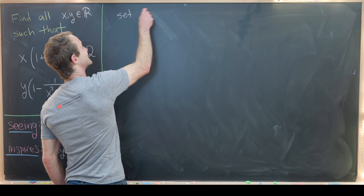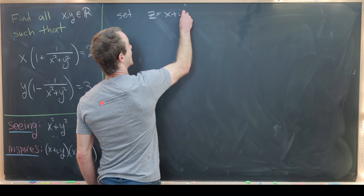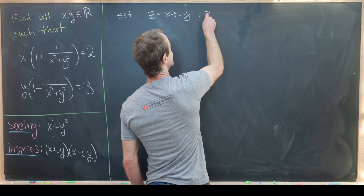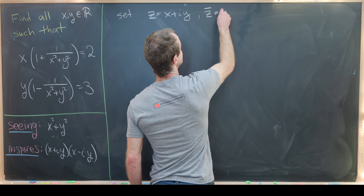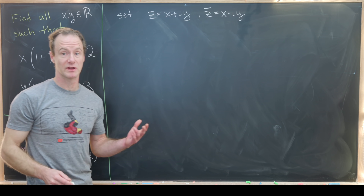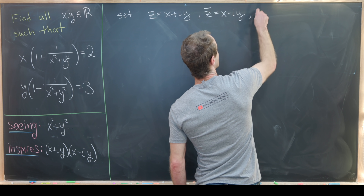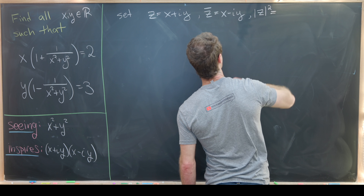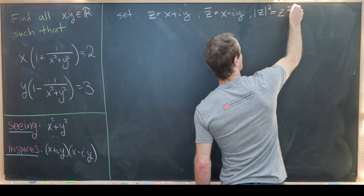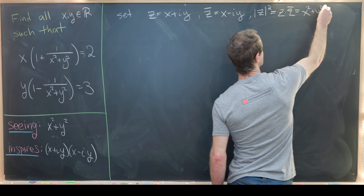Let's set z equal to x plus iy. Notice that z̄ equals x minus iy — that's the complex conjugate. Furthermore, the modulus of z squared, which equals z times z̄, is equal to x² plus y².